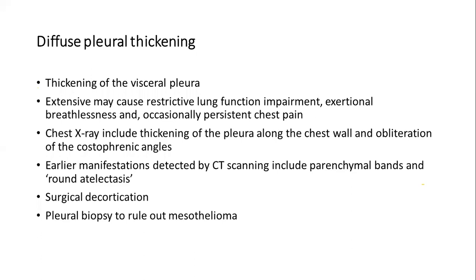On X-ray, diffuse pleural thickening shows thickening of the pleura around the chest wall and obliteration of the costophrenic angles. Treatment is usually symptomatic; in late cases, surgical decortication may be done. For all patients with pleural thickening due to probable asbestos exposure, you should always obtain a pleural biopsy to rule out pleural malignancy — mesothelioma.